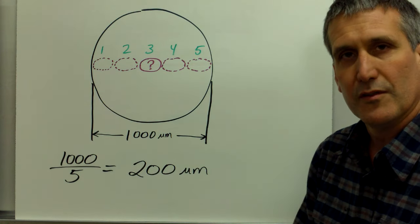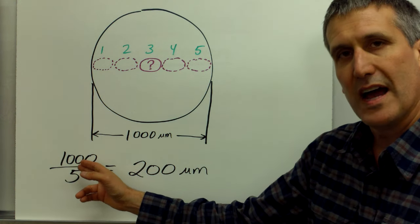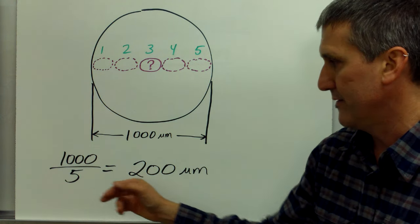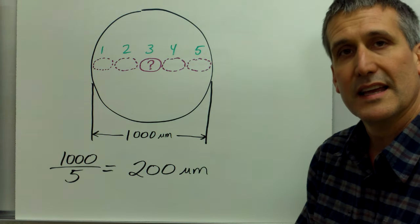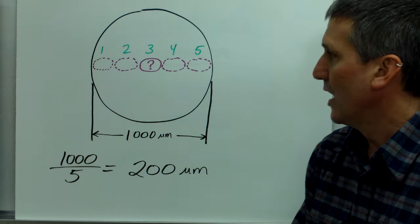You know that the diameter of the field of view is 1000 micrometers. So you take 1000, you divide it by 5, and it turns out that that cell is approximately 200 micrometers long.